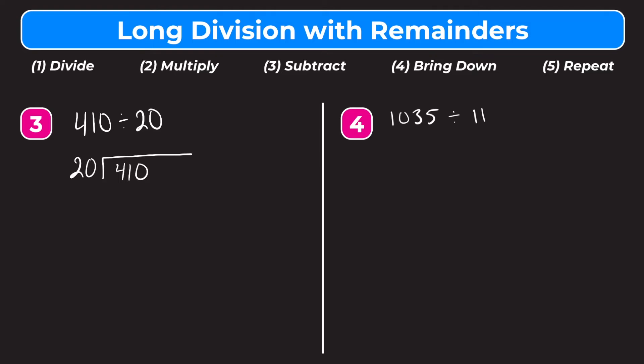Step 1 is divide. We ask ourselves how many whole groups of 20 fit into 4. Well, that's going to be none because 4 is smaller than 20. So we move over one digit to the right and use both: 4 and 1, so 41. How many whole groups of 20 fit into 41? That's going to be 2. Since we used both digits, we put the 2 over the 1. Step 2 is multiply: 2 times 20 equals 40. Step 3 is subtract: 41 minus 40 equals 1. Step 4 is bring down — we bring down our 0, making this 10.